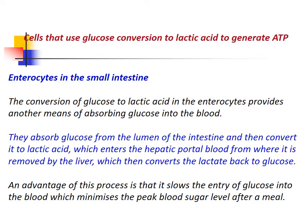Enterocytes in the small intestine: The conversion of glucose to lactic acid in the enterocytes provides another means of absorbing glucose into the blood. They absorb glucose from the lumen of the intestine and convert it to lactic acid, which enters the hepatic portal blood, from where it is removed by the liver, which then converts the lactate back to glucose. An advantage of this process is that it slows the entry of glucose into the blood, minimizing the peak of blood sugar levels after a meal.